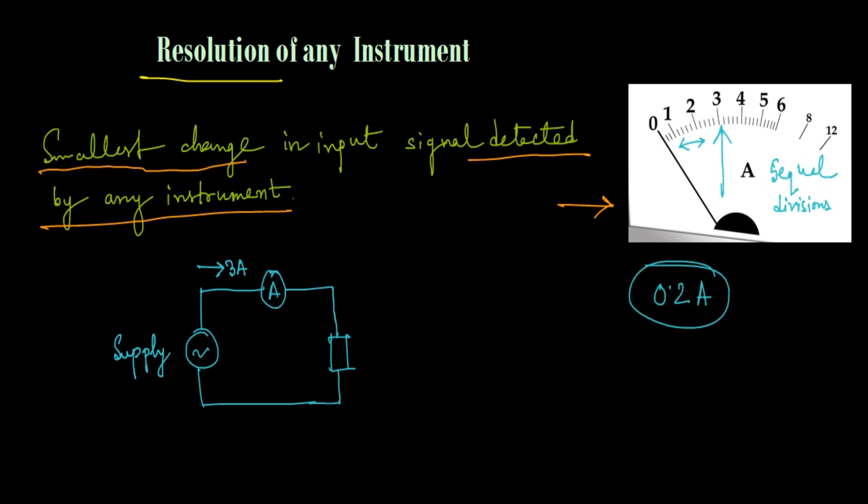So each division denotes 0.2 ampere. Now here comes the mix-up. The majority of students mix it up, thinking that this 0.2 ampere is the resolution of this particular ammeter. This is a completely wrong concept.